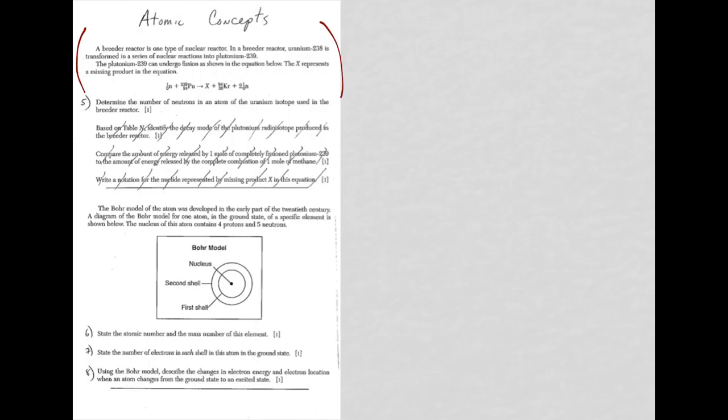So here's more information above question 5. We're looking for the number of neutrons in an atom of a uranium isotope used in this breeder reactor. It's not coming from this equation, it's actually here in the reading passage. We're dealing with uranium-238. 238 is what's called the mass number.